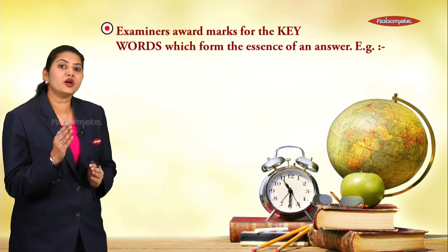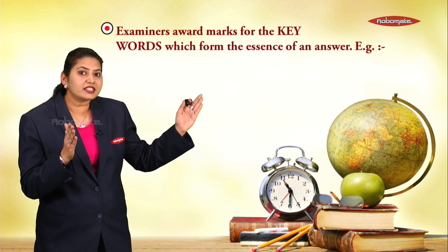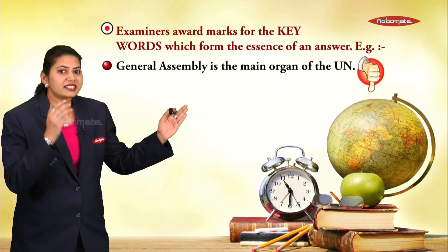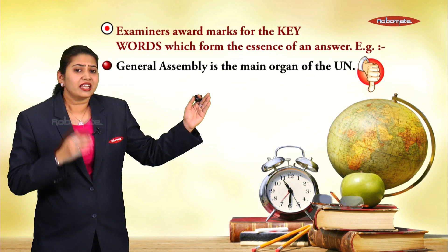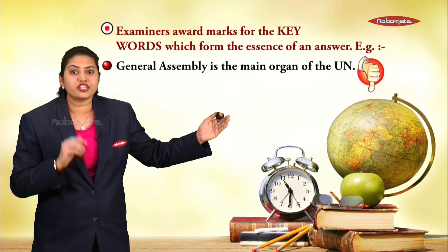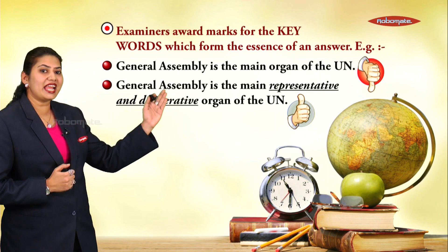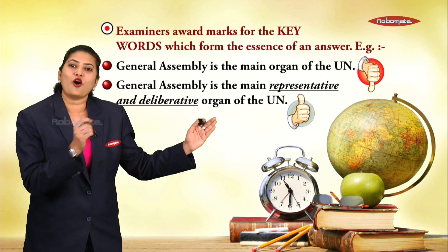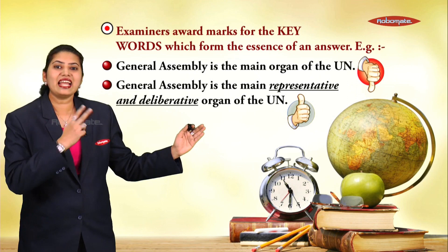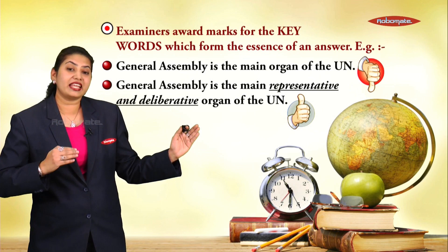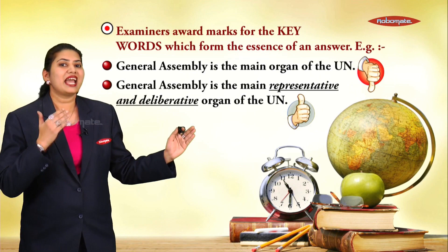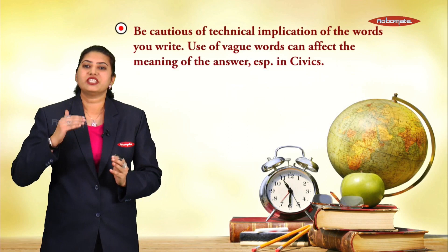Another area where you might lose marks is the use of keywords. Keywords form the essence of your answer, so your answers must contain all the key words. For example, an average student would write 'General Assembly is the main organ of the United Nations,' but a student aware of keywords would write 'General Assembly is the main representative and deliberative organ of the United Nations.' The words 'deliberative' and 'representative' enhance the weightage of your answer and help you score much better.